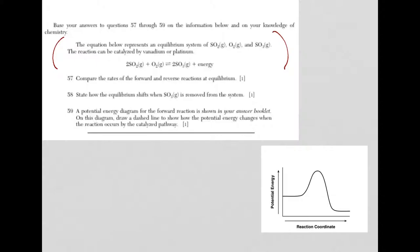For question 57, it's asking about the rates of the forward and reverse reactions at equilibrium. What you need to know, what's equal at equilibrium, are the rates. So the rates are the same at equilibrium, or you just say that they're equal. That's just a fact, information you need to know.